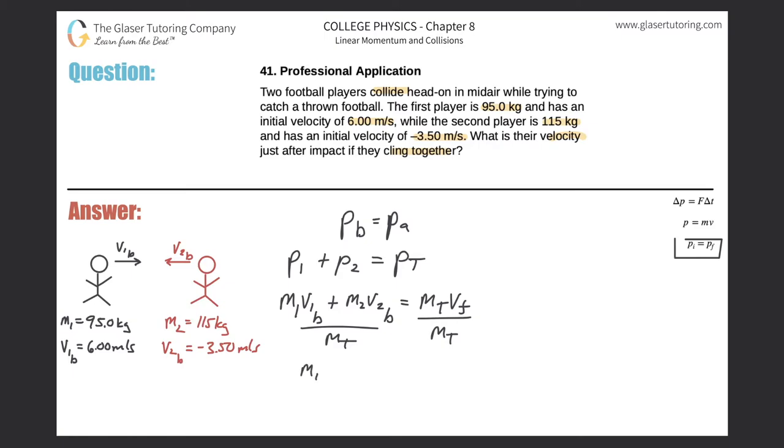So now, rewriting this, it's going to be m1v1b plus m2v2b, all over the total mass, which remember the total mass is really m1 plus m2 because we're just adding the masses, and that's equal to then the final velocity. So this is the equation that we need here.